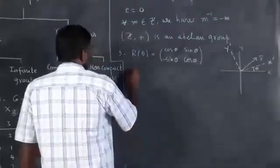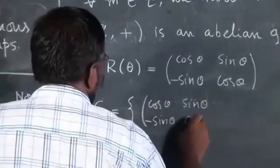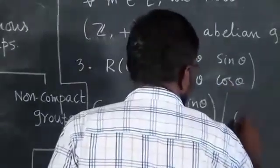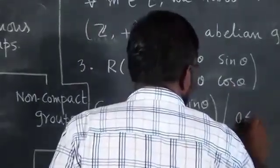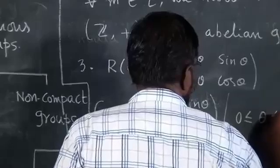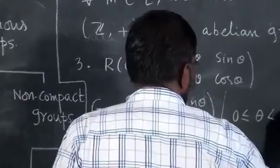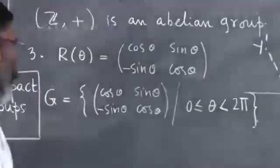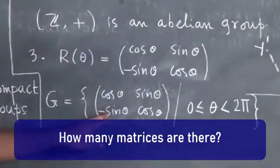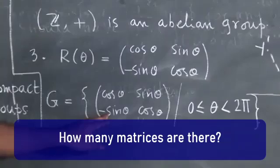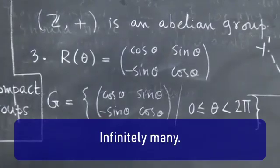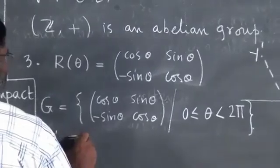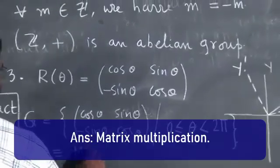Now, if I consider all such matrices where theta ranges from 0 to less than 2π, how many such matrices are there? Infinitely many matrices. What is the composition here? Matrix multiplication.